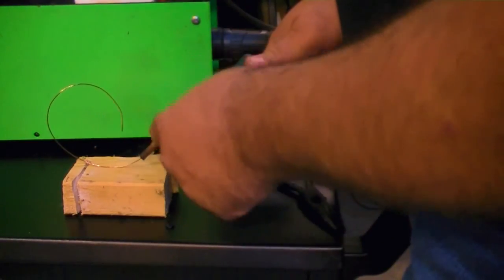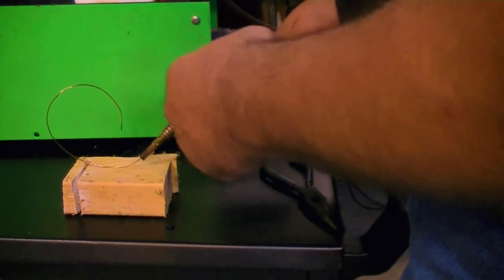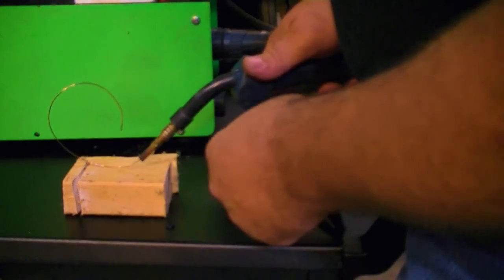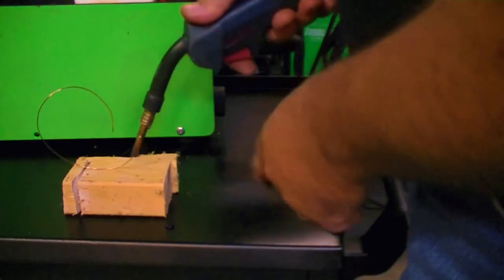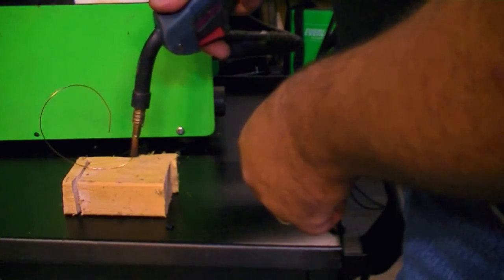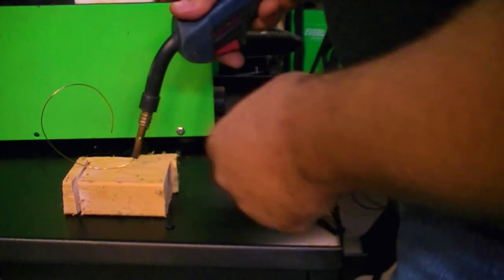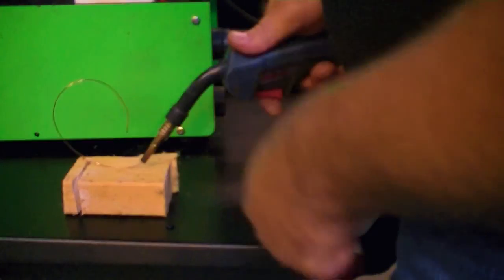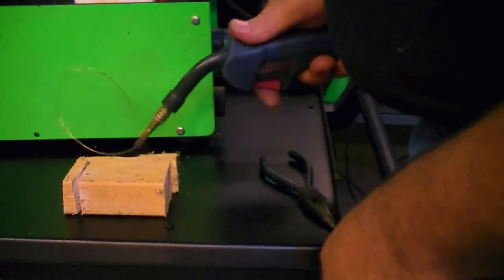You see that? It should curl up if you've got the proper tension. If you don't, it'll actually just stick and dig into the wood. When you're testing, make sure you're not feeding directly down or you'll stick this into the block of wood. You want to angle so that the wire will actually curl over like this.